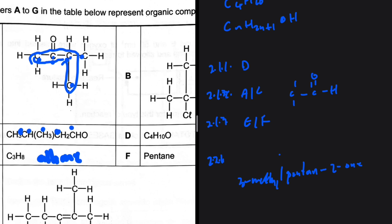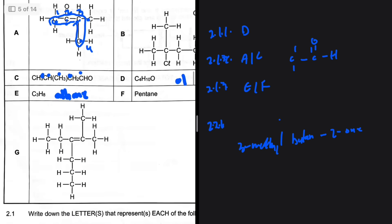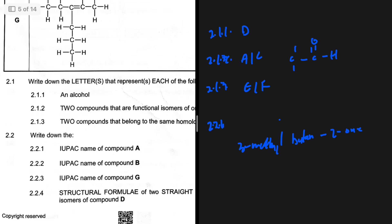Wait — let me recount: one, two, three, four — that is actually only four carbons. So it's butane, not pentane. The correct name is butan-2-one, with the functional group on the second carbon and a branch on the third carbon. So the answer to 2.2.1 is 3-methylbutan-2-one.